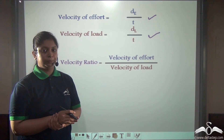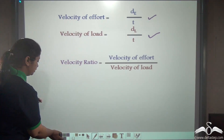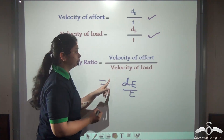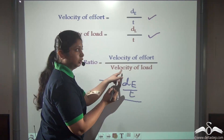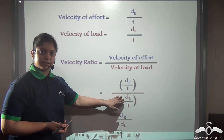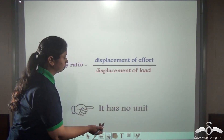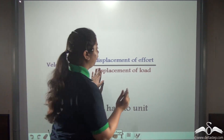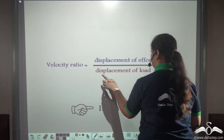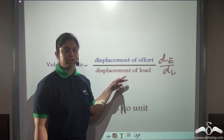Now, what will be the velocity ratio? It will be velocity of effort by velocity of load. So if we substitute these terms, it can be written as DE/T divided by DL/T. You can solve this expression where the time factor gets cancelled out and you get DE by DL. So velocity ratio can also be written as displacement of effort (DE) divided by displacement of load (DL). It does not have any unit because the same factors in the numerator and denominator cancel out.